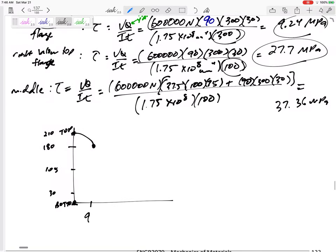it goes from 9.24, so let's say this is the tau, this is the height h, it goes from 9.24 immediately, we're assuming immediately to this 27.7 MPa. Then it still is getting larger to the maximum 37.36, and so that's what the distribution would look like.